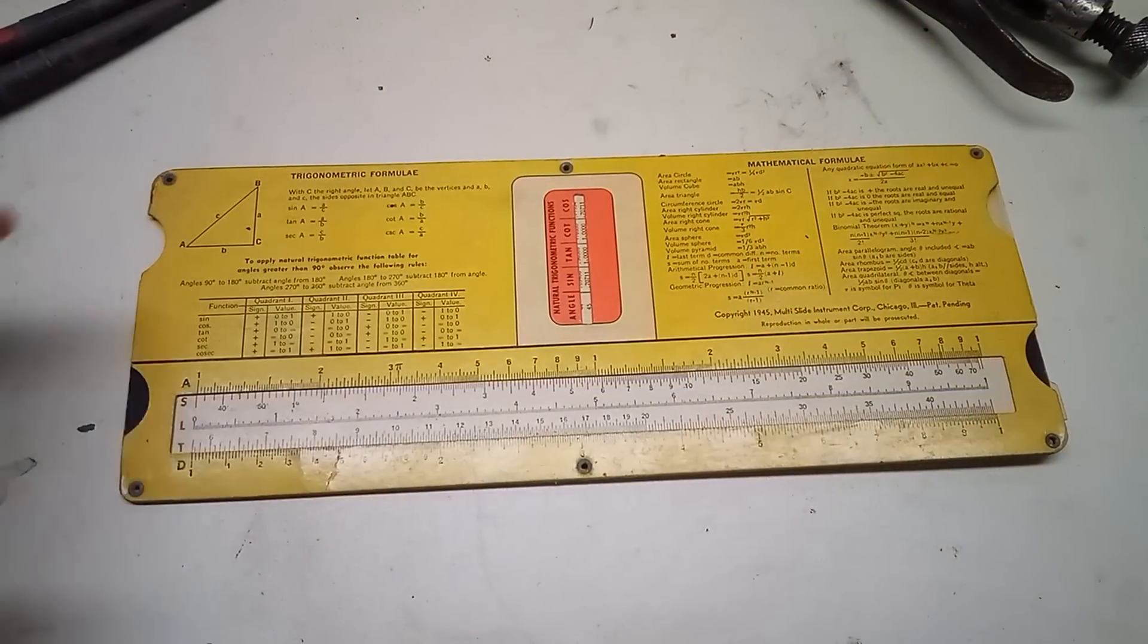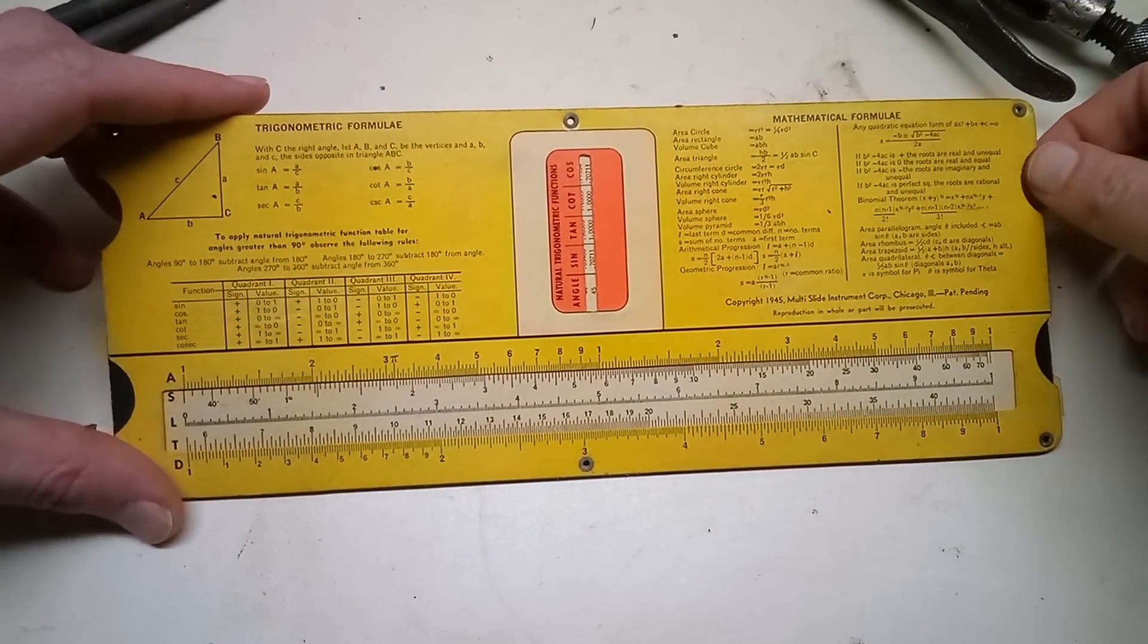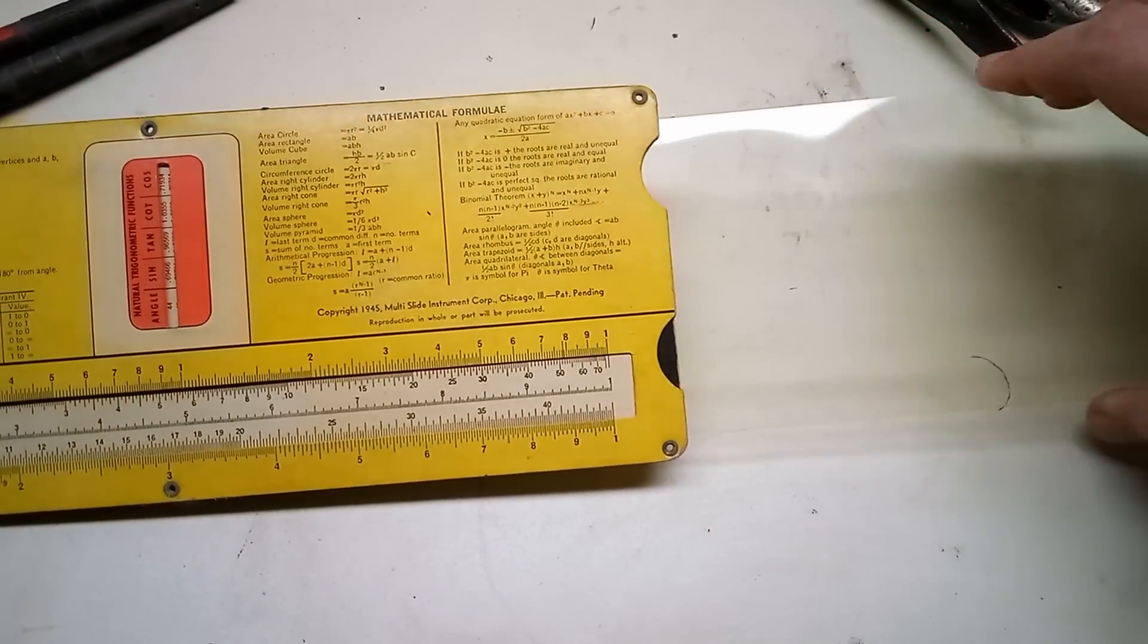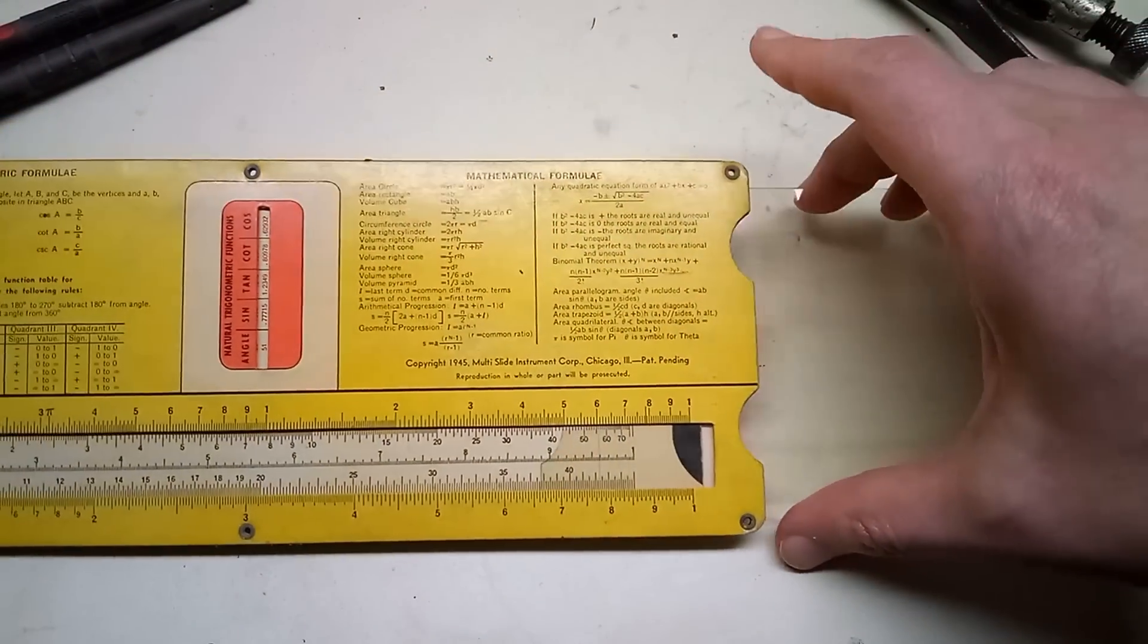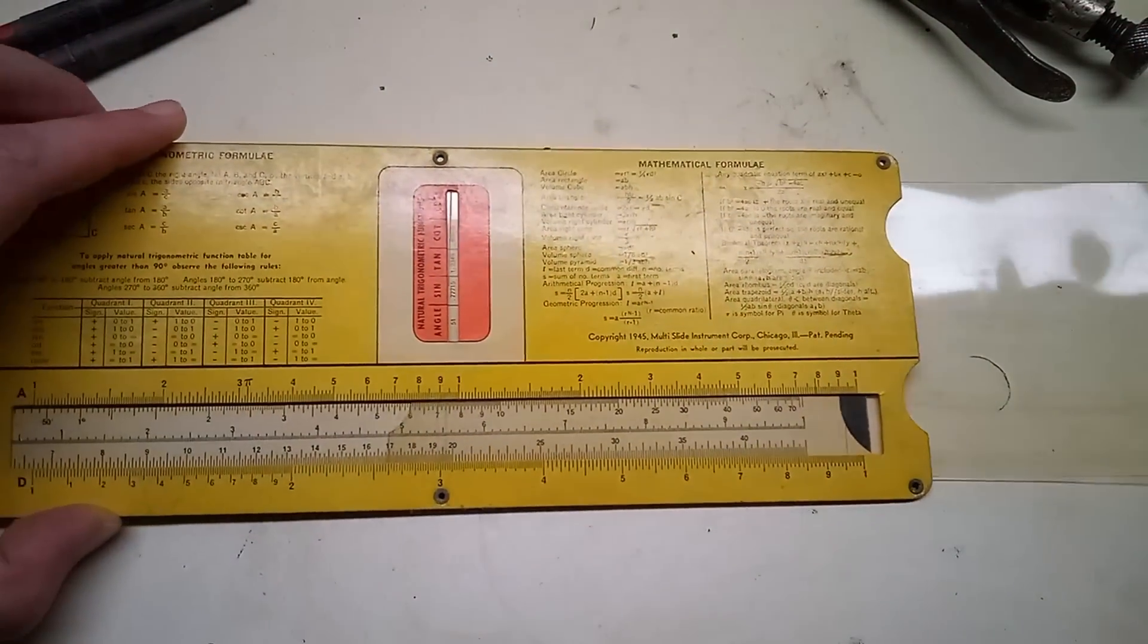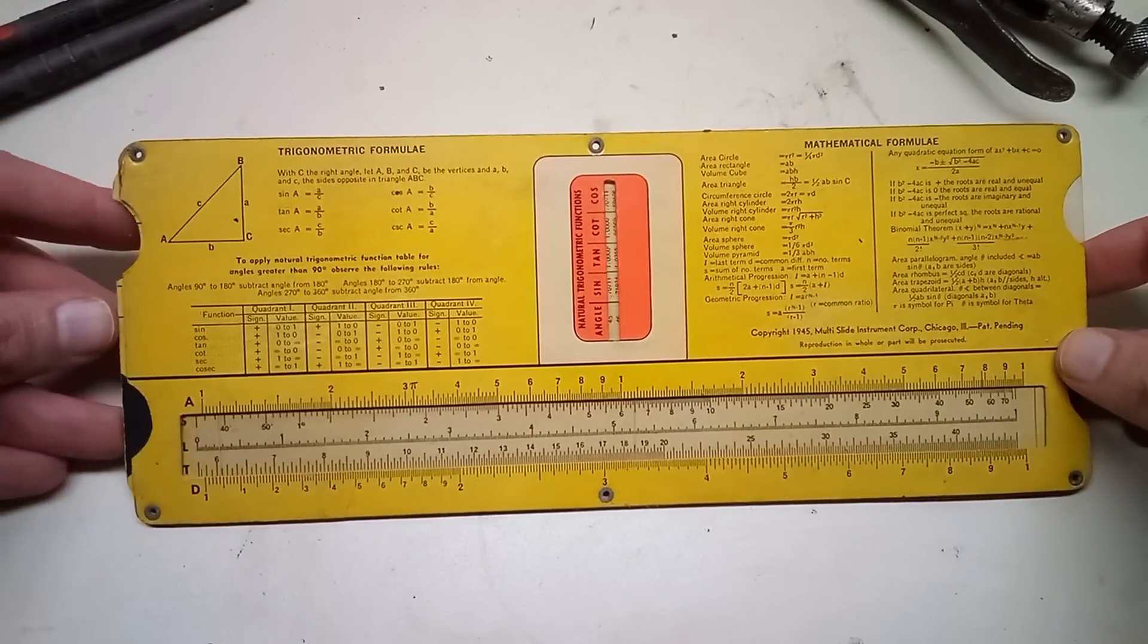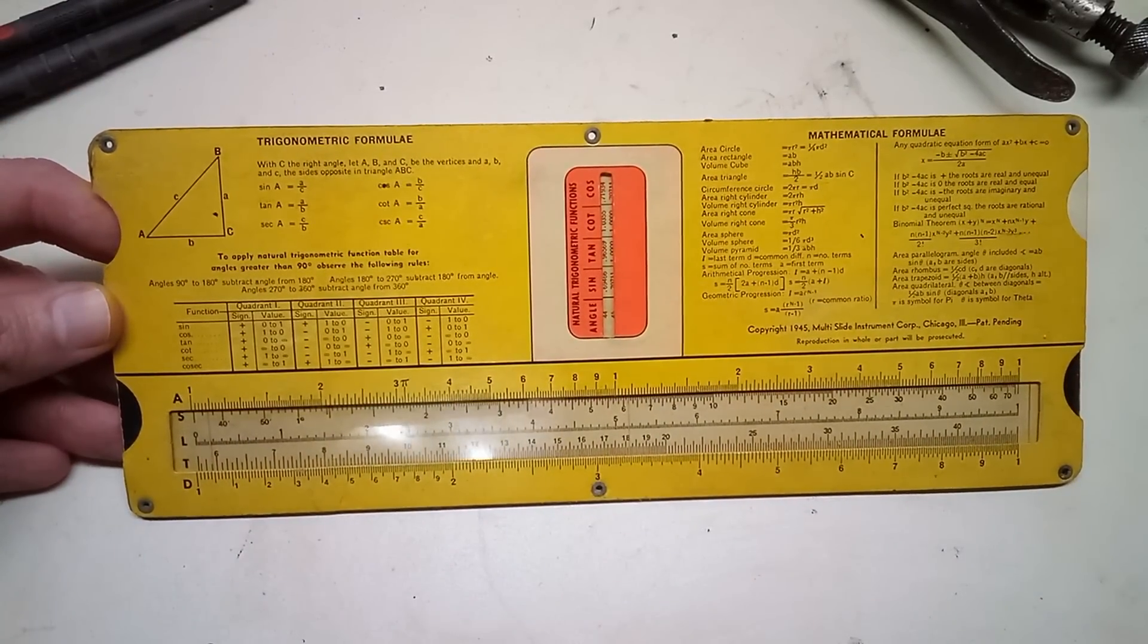Now on the back scale there is no cursor, so if you wanted to use these scales you'd have to slide out the cursor from the front side—it's just a clear piece of plastic—and then slide it back in on the back side. I don't know if this one is missing the back cursor or if it never came with one, since this was likely a cheap freebie item that the company gave away. Either way, it's a neat relic.